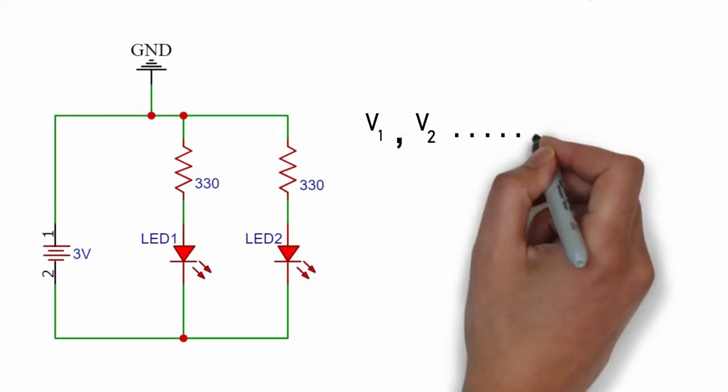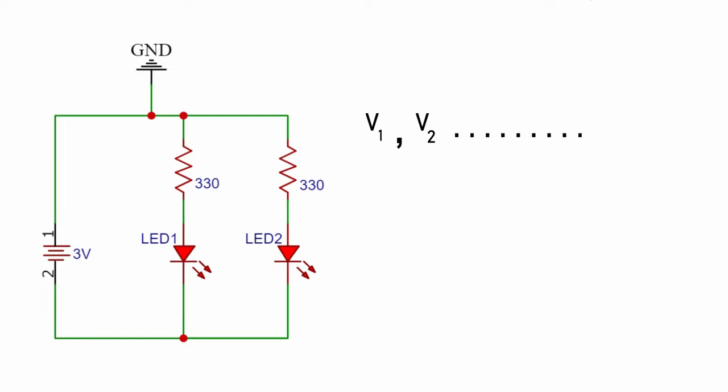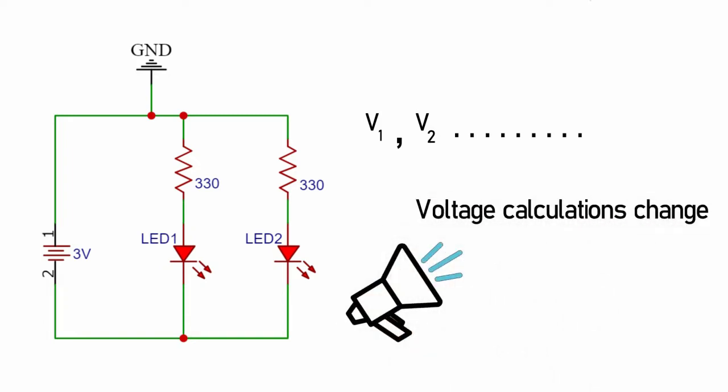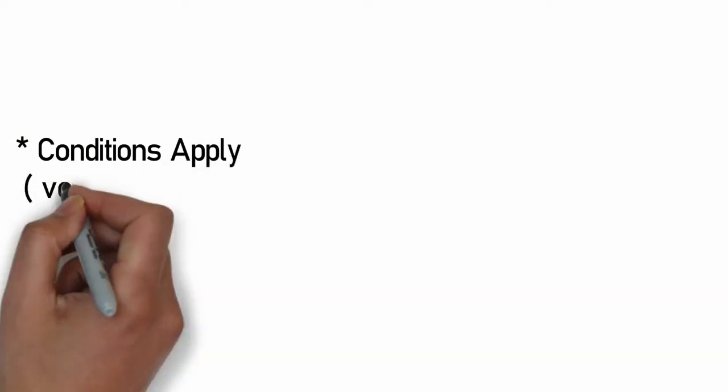But there is one thing that gets affected if we change the position of our ground. It is nothing but our entire calculations. All those voltage calculations of different points on the circuit that we have done earlier will change since we changed our reference point.